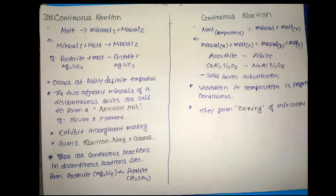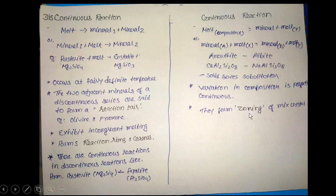Some additional differences: the discontinuous reaction series exhibits incongruent melting and forms reaction rims and coronas — a common exam question. The continuous reaction series forms zoning. There is also an important interview question: does the discontinuous series contain any continuous reaction within it?